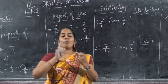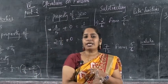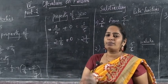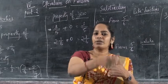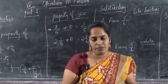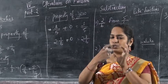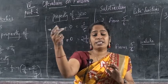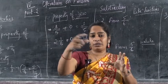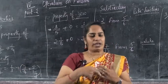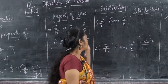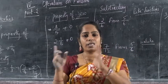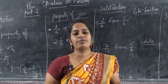We have to learn three properties. Which are: commutative property, associative property, and property of zero. Commutative property means when we are adding two numbers, the reverse order also gives the same answer. Associative property means when we are adding two fractions and then to the third fraction, it is the same as adding the second and third fraction first and then to the first fraction. Property of zero means when we are adding a fraction with zero, the same fraction we will get.